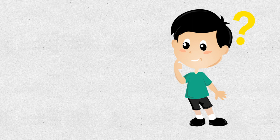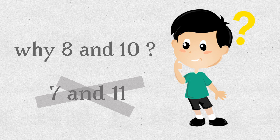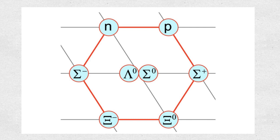Now the question arises: why the families of eight and ten and not seven and eleven? How did Gell-Mann come to know about these classifications?